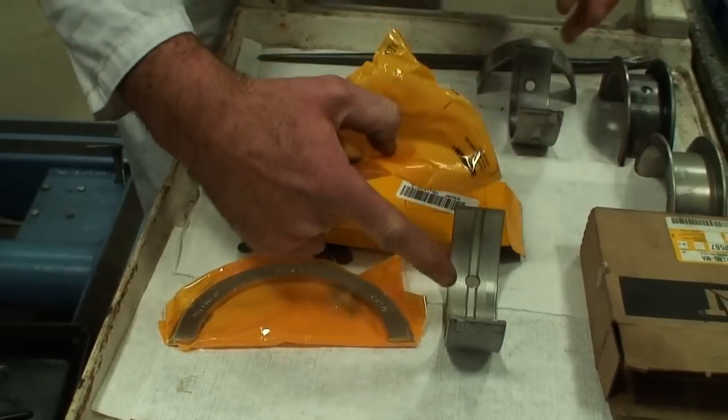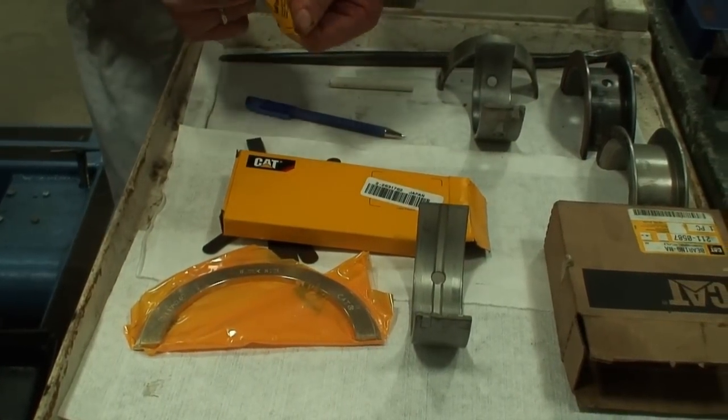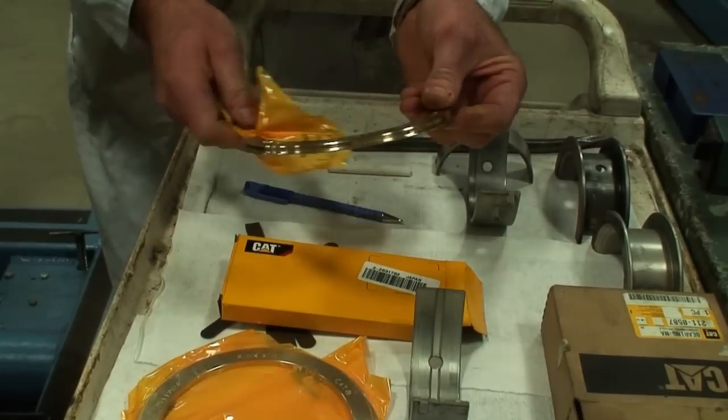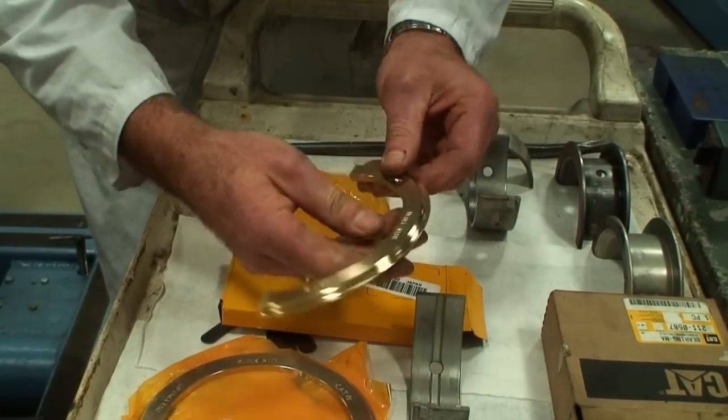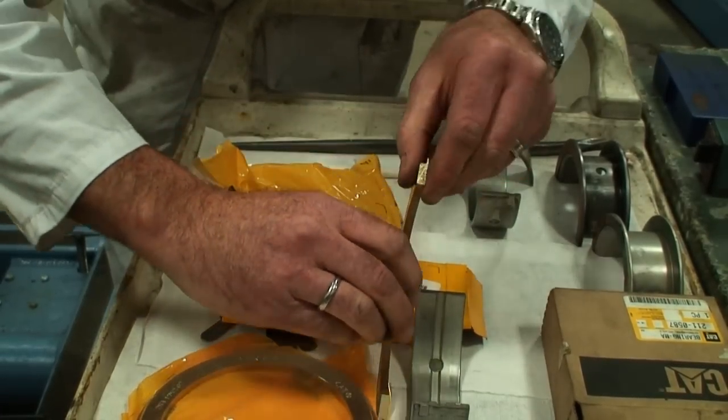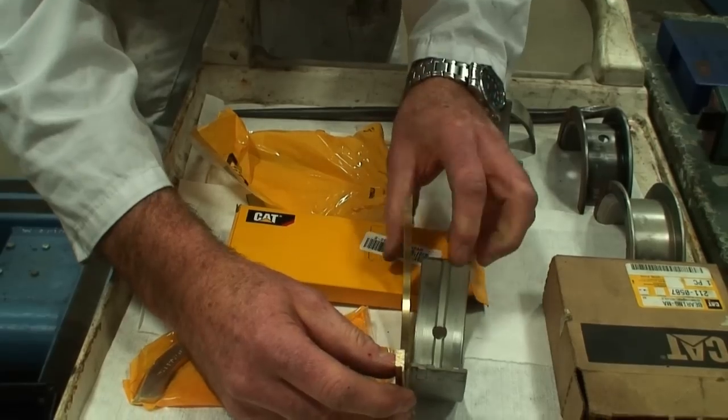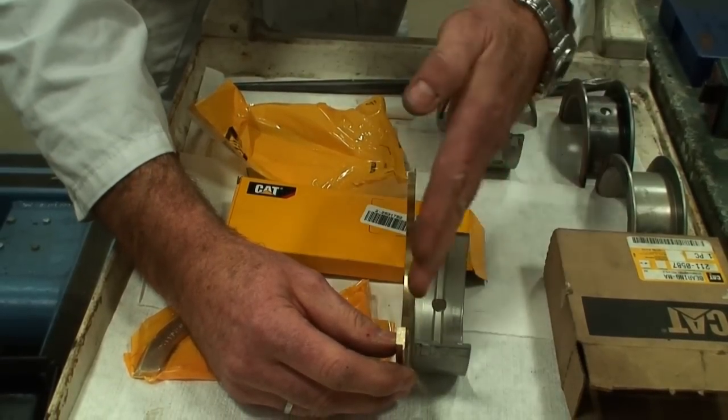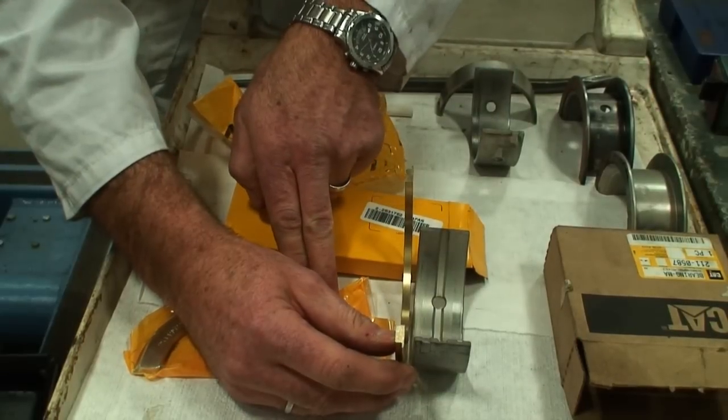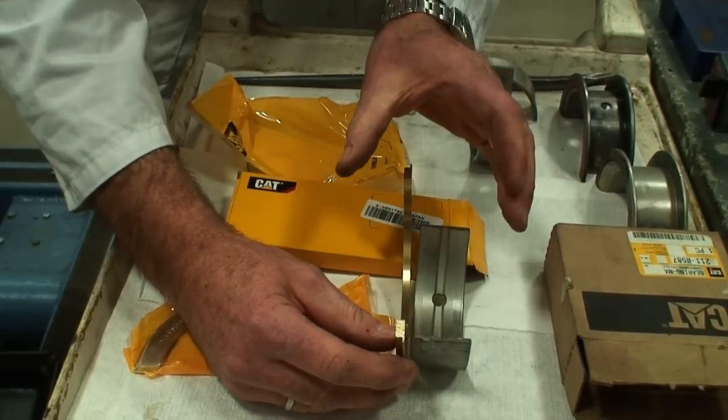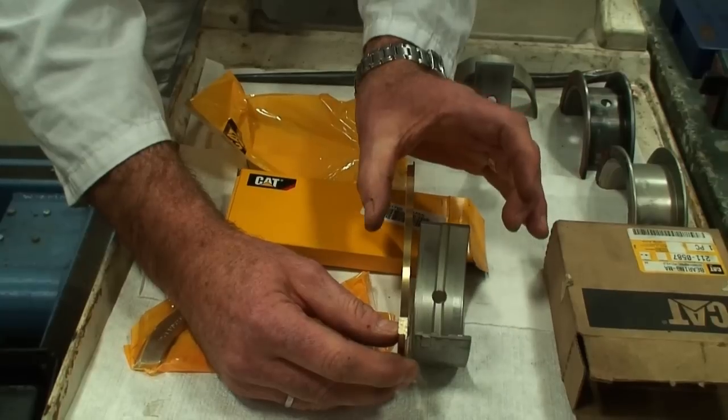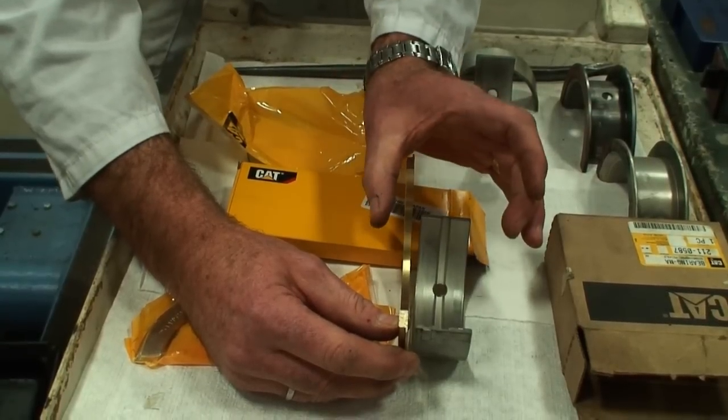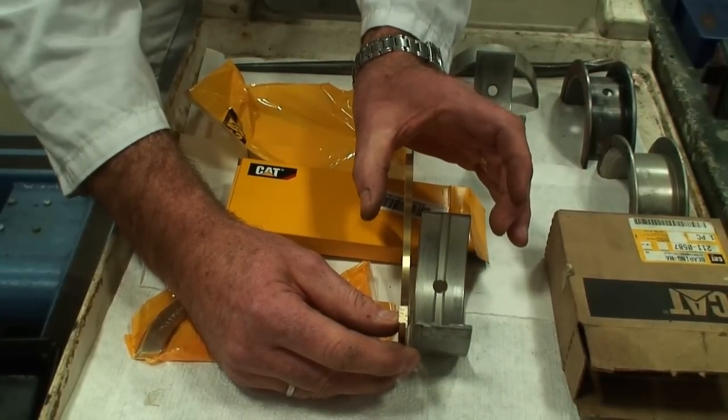Then we actually use a brass shim that slides down into the block, sits into position, and between two of them controls the end float. So we would have one on one side, one on the other, and the manufacturer's prescribed based on the size and dimension of these shims, how much end play it's going to control.